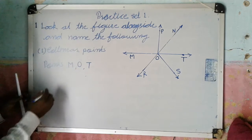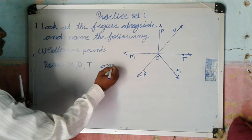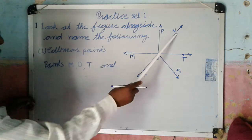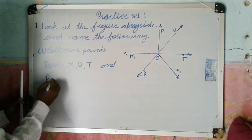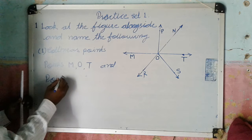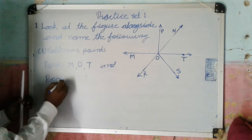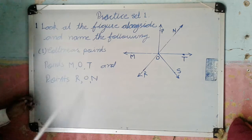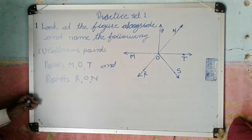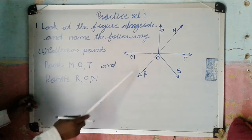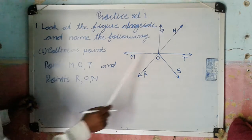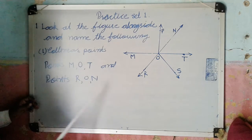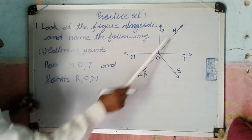Points N, O, T. Points R, O, N. These are the collinear points. These points M, O, T are on the line MT, and the points R, O, N are on the line RN.